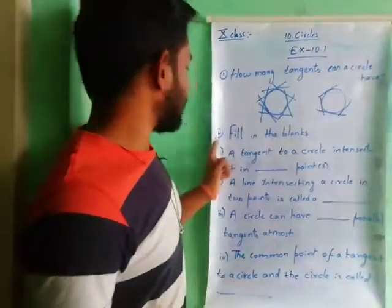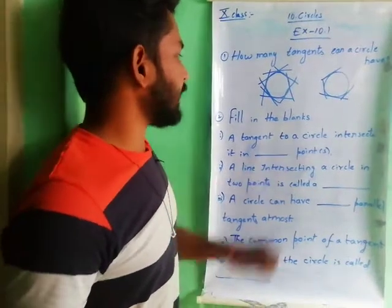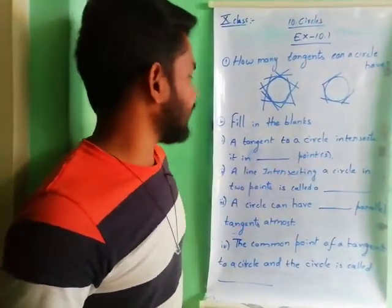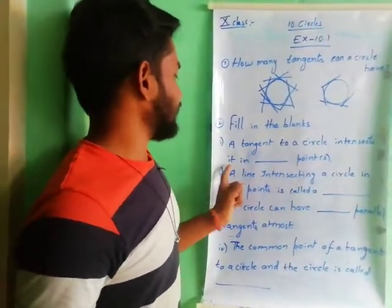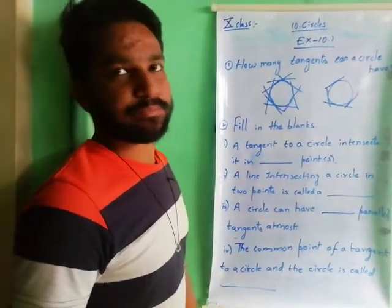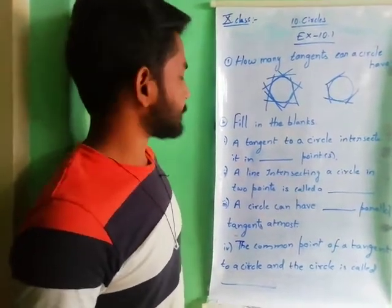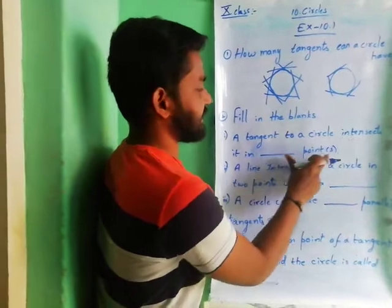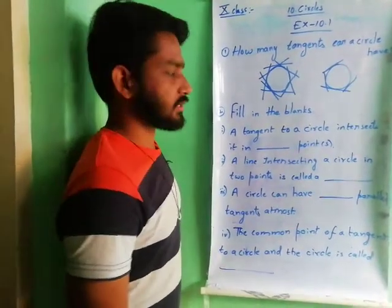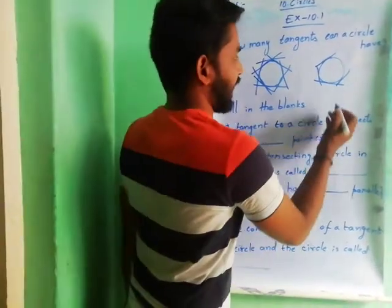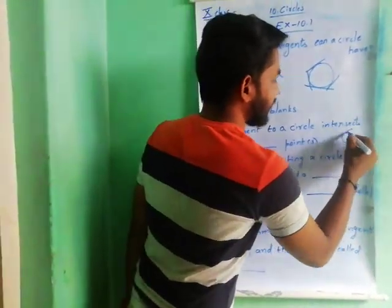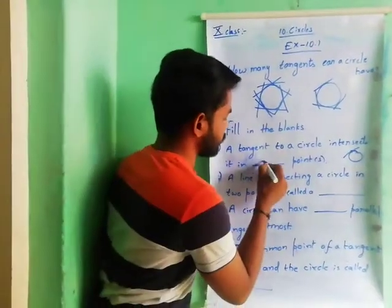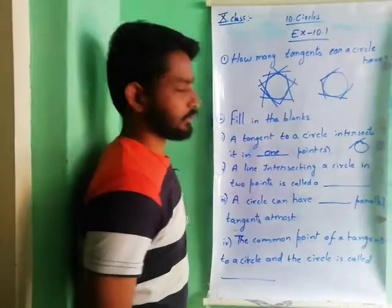Coming to the second one — filling the blanks. A tangent to a circle intersects it in how many points? A tangent always intersects in exactly one point.